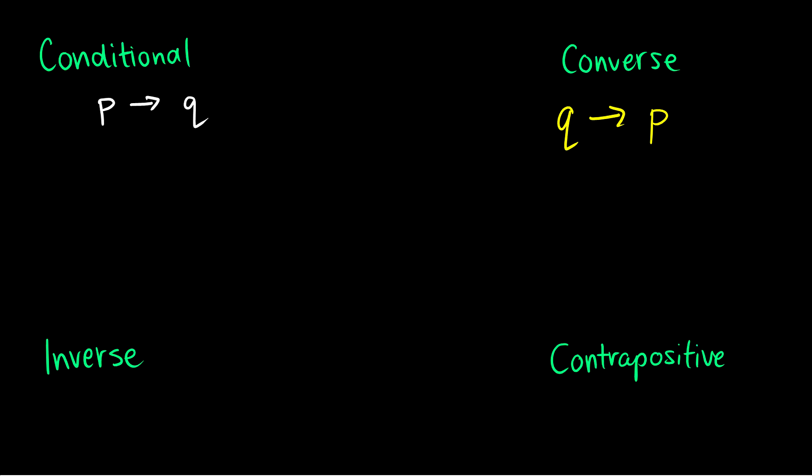The inverse is taking the conditional and just adding negations in front of each formula. So the inverse of P arrow Q is not P arrow not Q.